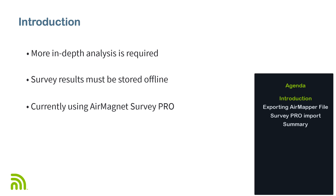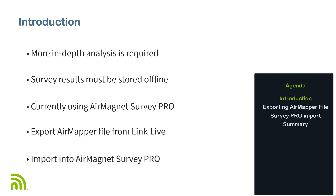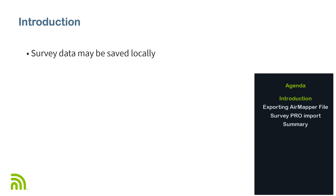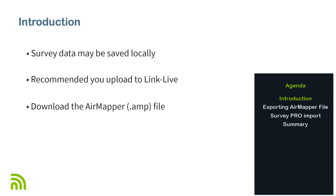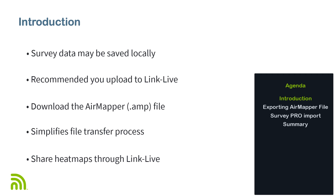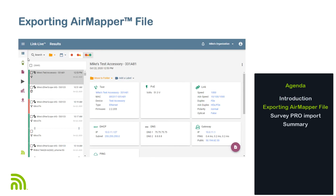If your organization is currently using Air Magnet Survey Pro to conduct and analyze Wi-Fi site surveys, you may want to continue to produce the same reports even if an AirCheck G2 or Etherscope NXG with AirMapper are used to collect the site survey data. In this video, I will go through the process of exporting the site survey data from LinkLive and importing the .AMP file into Air Magnet Survey Pro. While it is possible to save the .AMP file locally on the AirCheck G2 or the Etherscope NXG, it is recommended that you upload the results to LinkLive and then download the data to Air Magnet Survey Pro.